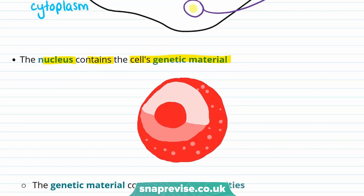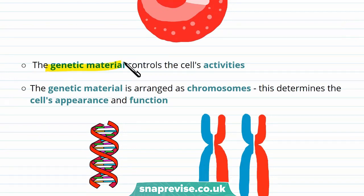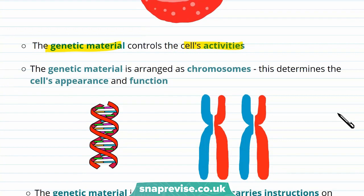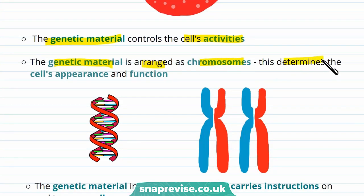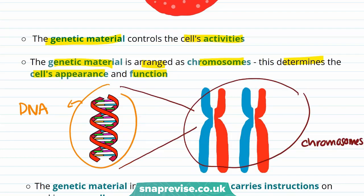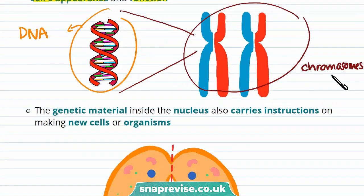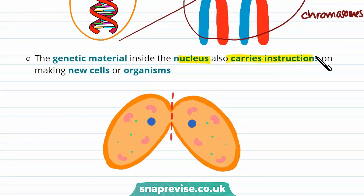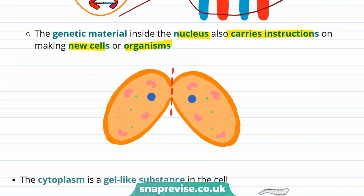The nucleus contains the cell's genetic material, and its function is really important — the genetic material found in the nucleus controls the cell's activities. The genetic material is actually arranged as chromosomes, and this determines the cell's appearance and function. In this case the genetic material is DNA, arranged as chromosomes. The genetic material inside the nucleus also carries instructions on making new cells or organisms, and can be passed on to offspring.